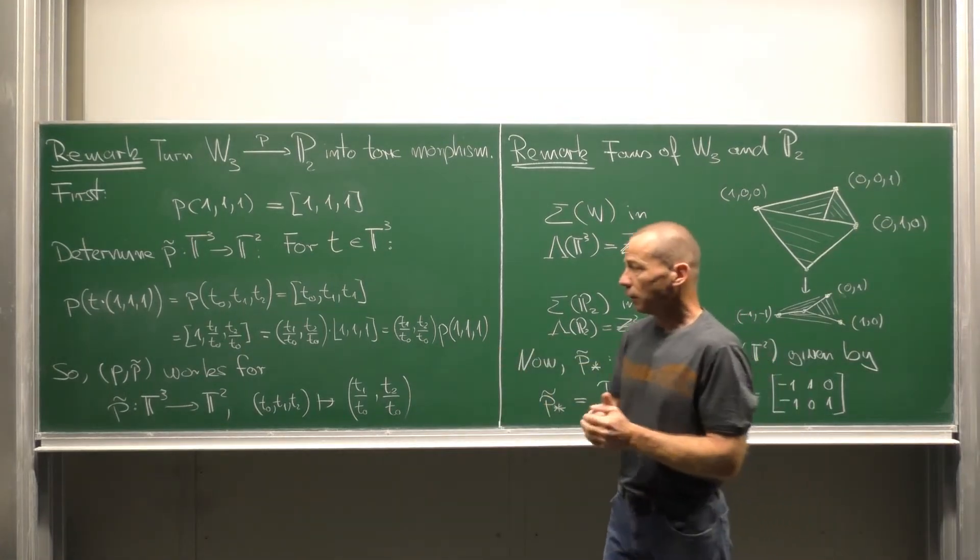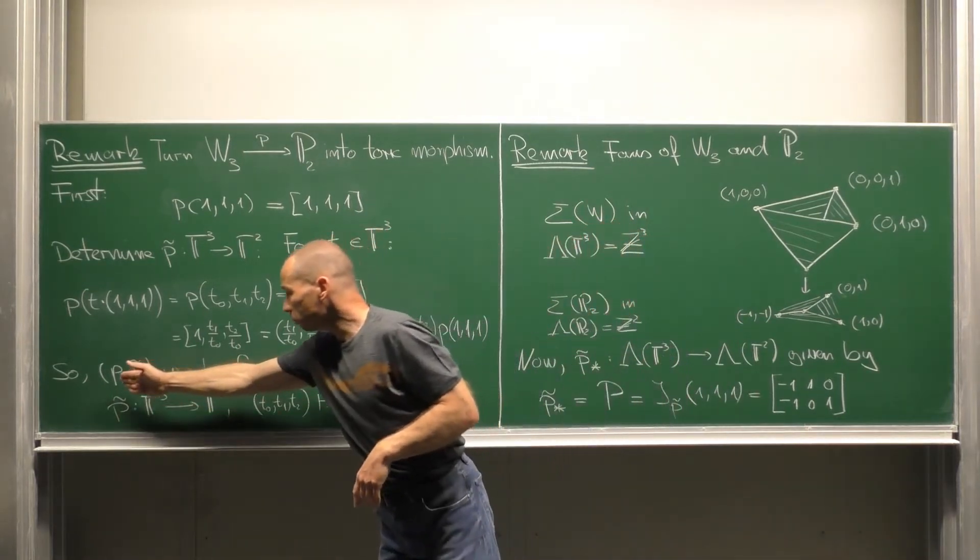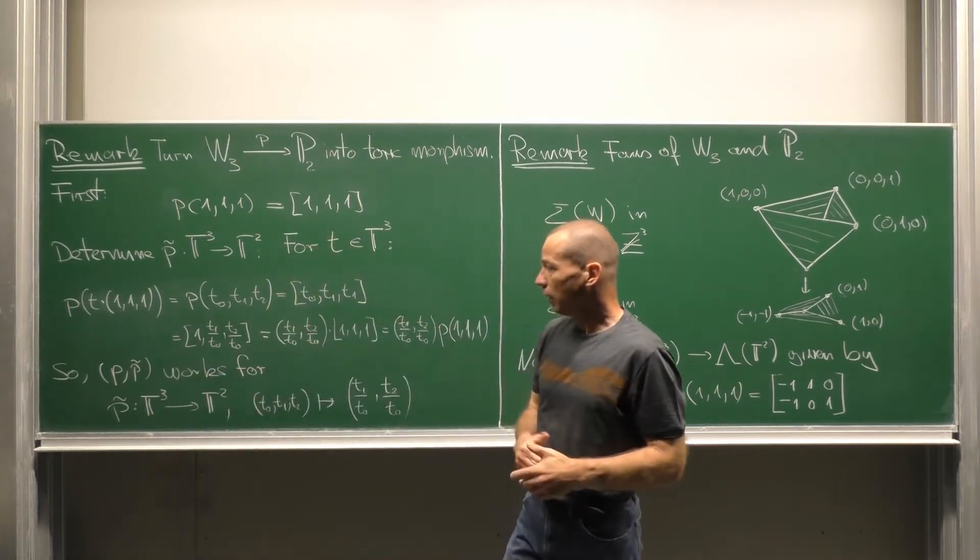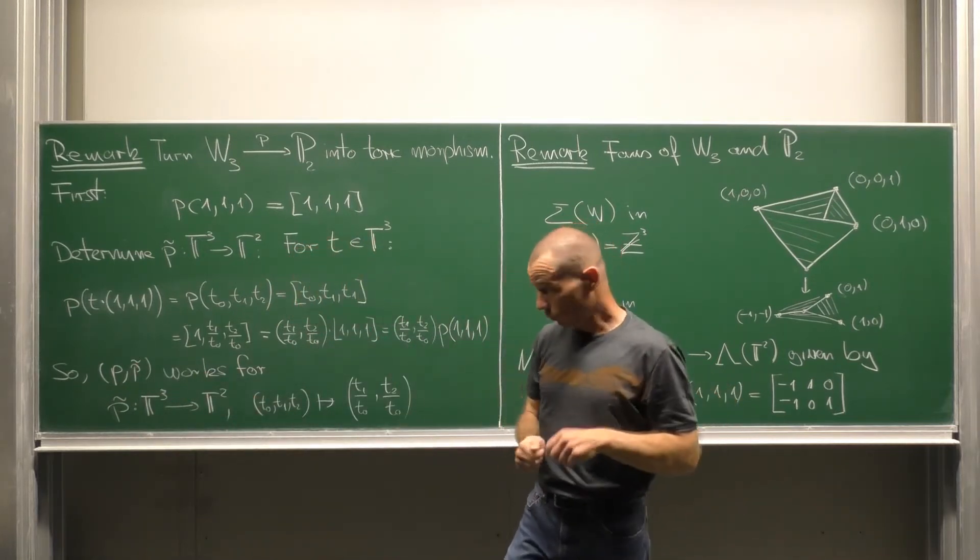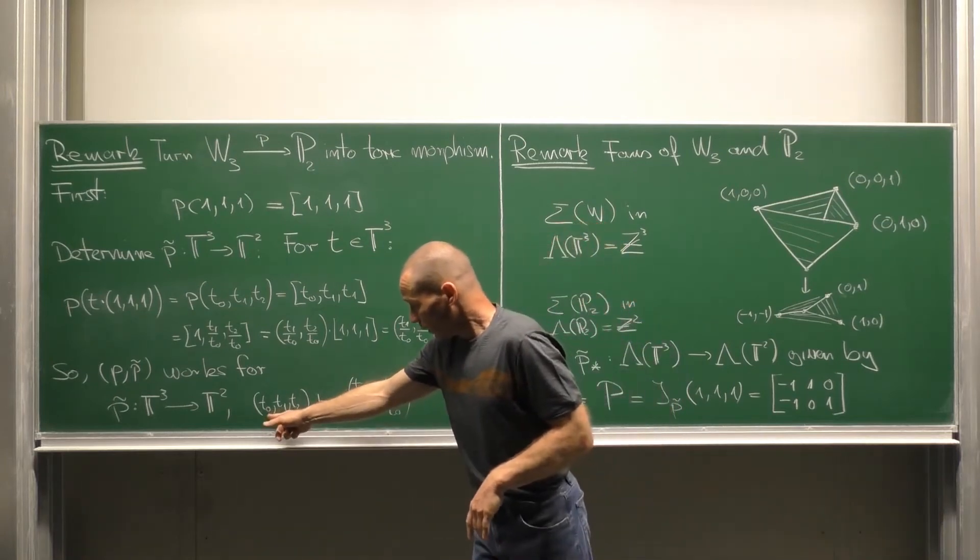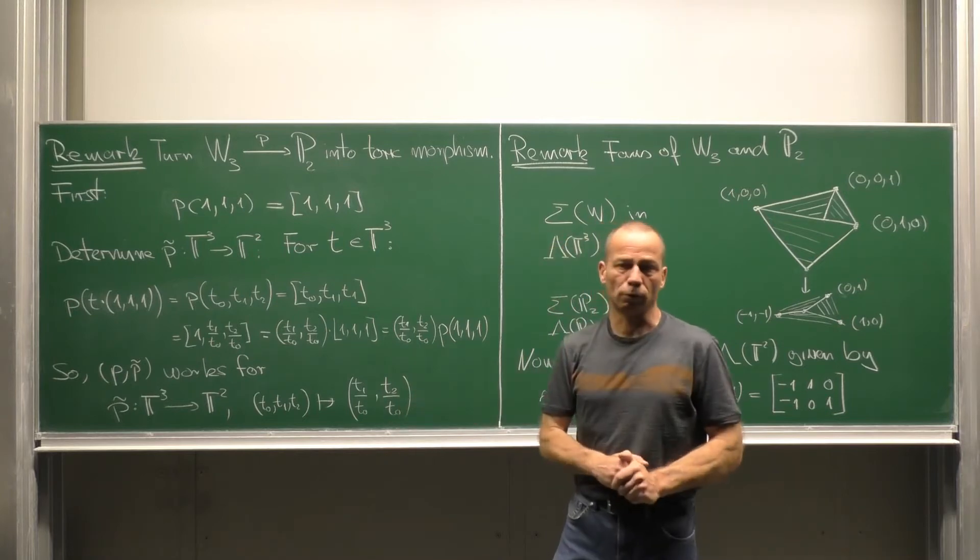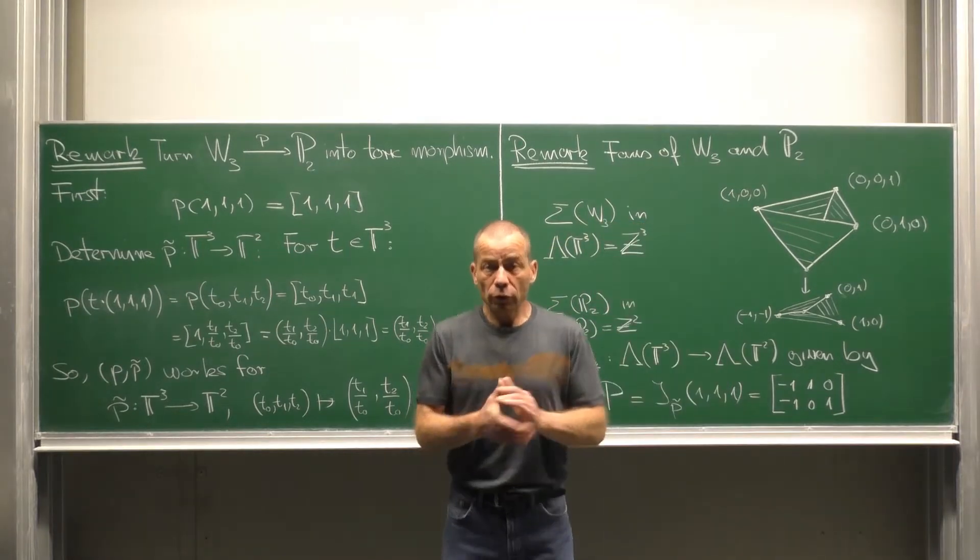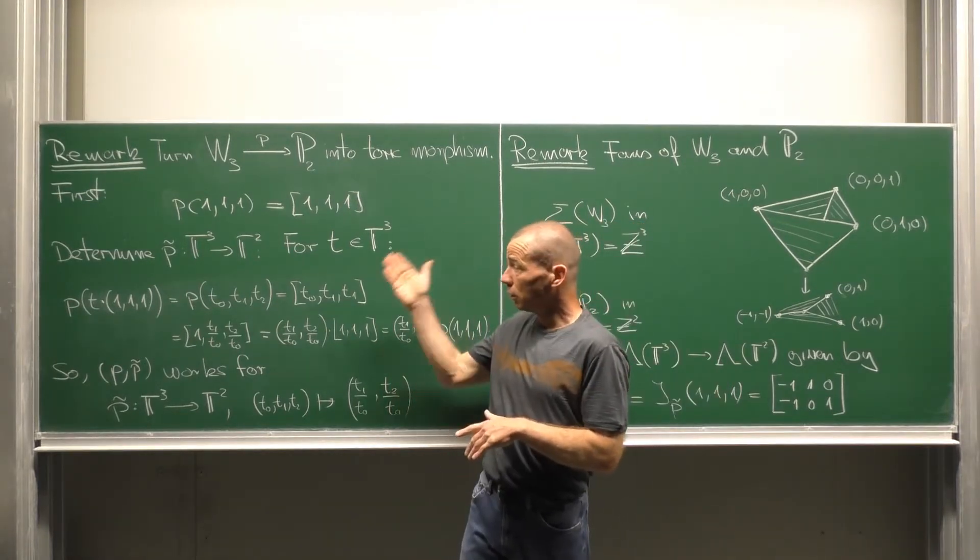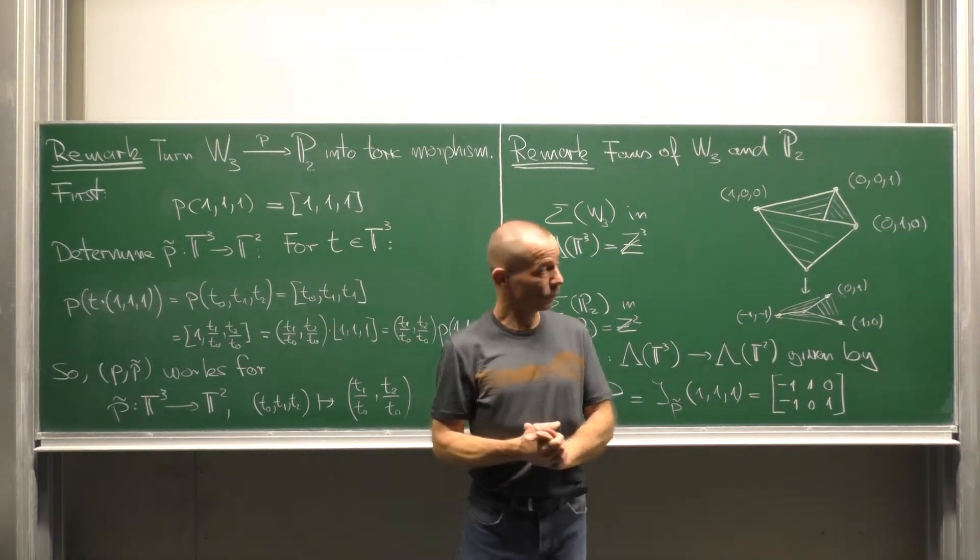So we end up with T₁ over T₀ times the image P of (1,1,1). That means that we have found our toric morphism P tilde where P tilde from the three torus to the two torus is given by (T₀,T₁,T₂) goes to (T₁ over T₀, T₂ over T₀). Now we want to see how this toric morphism looks like in the setting of the lattice fans.